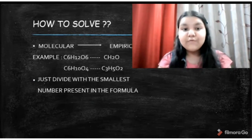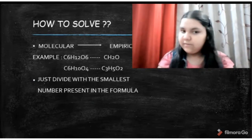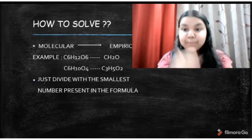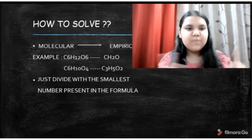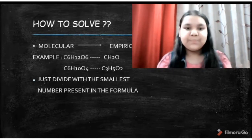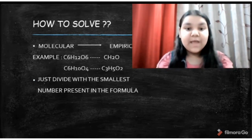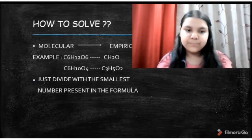Now we will learn how to convert molecular formula to empirical formula. The first example is sugar. Here we first find the smallest number, which is six. We divide the whole formula by six, and the answer comes out as CH2O.